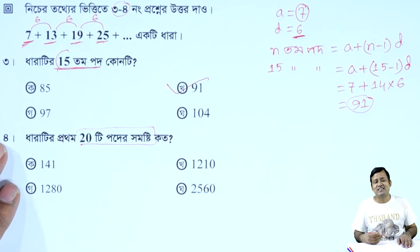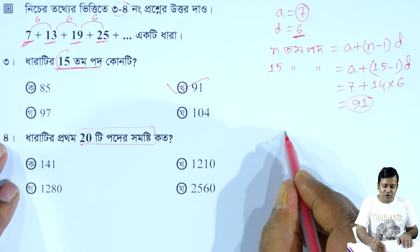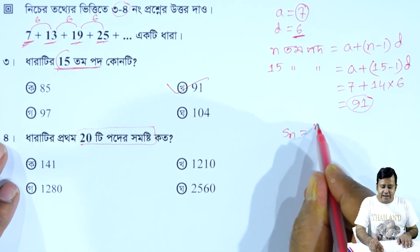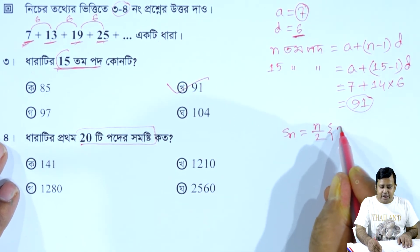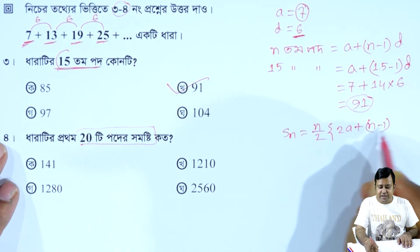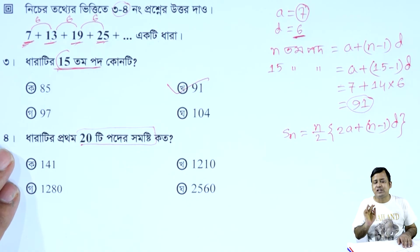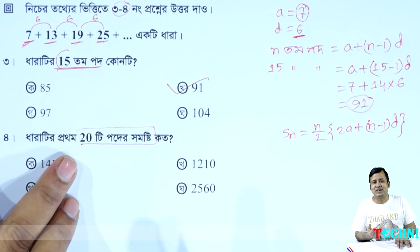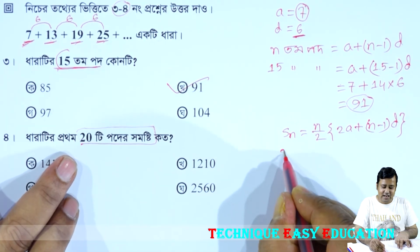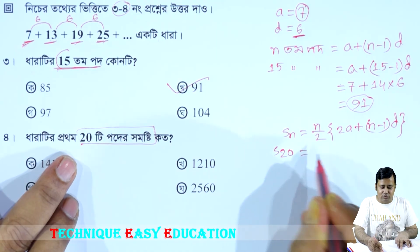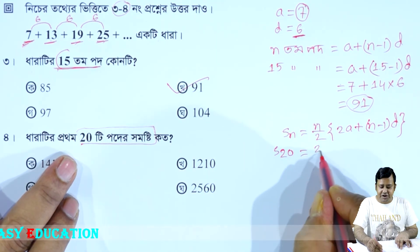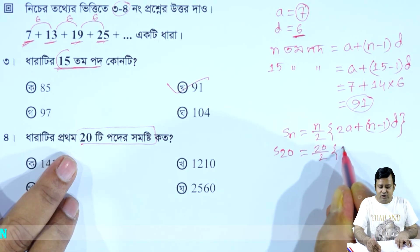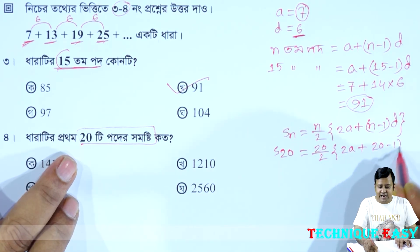We will now find the sum of the first n terms. The sum formula is: Sn equals n by 2 into 2a plus n minus 1 into d. So for 20 terms: S20 equals 20 by 2 into 2a plus 20 minus 1 into d.